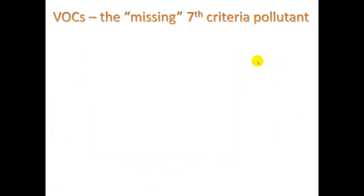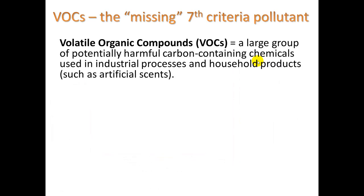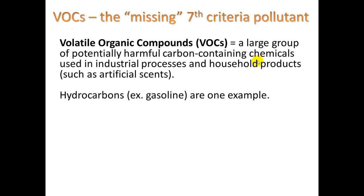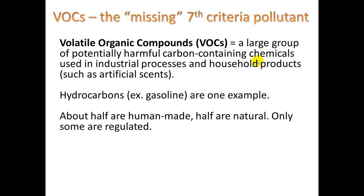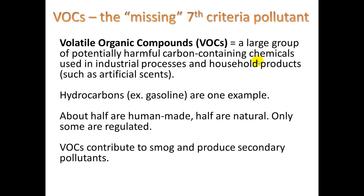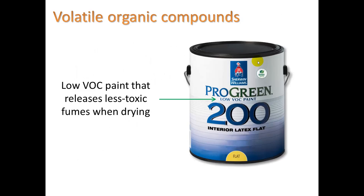VOCs — volatile organic compounds — are sometimes thought of as the missing seventh criteria pollutant. They are a large group of potentially harmful carbon-containing chemicals used in industrial processes and household products, such as artificial scents. Anything you're smelling is basically a VOC. Hydrocarbons from gasoline are one example. About half are human-made and half are natural, and only some are regulated. VOCs contribute to photochemical smog and produce secondary pollutants. If you're buying paint, look for low-VOC paint that releases less toxic fumes when drying.